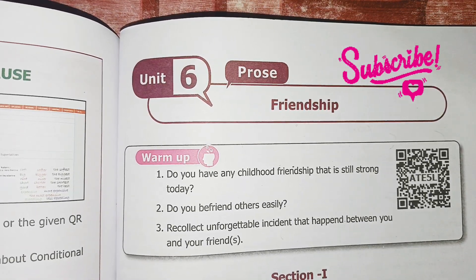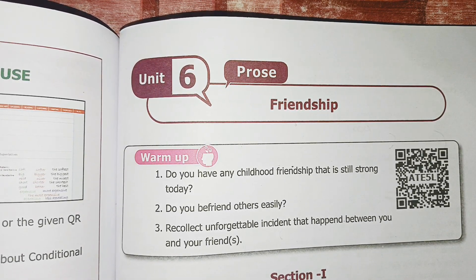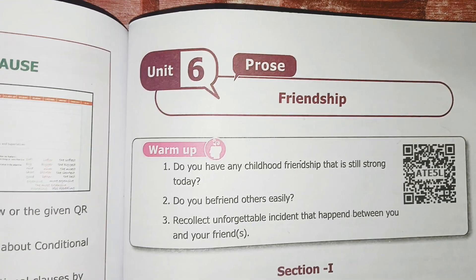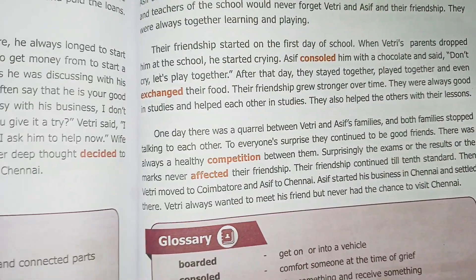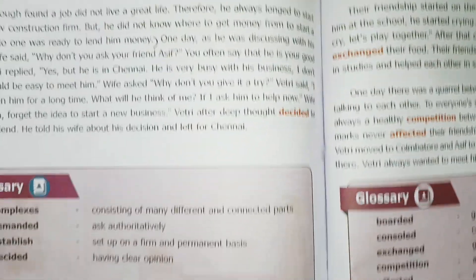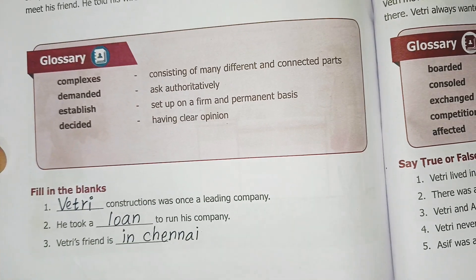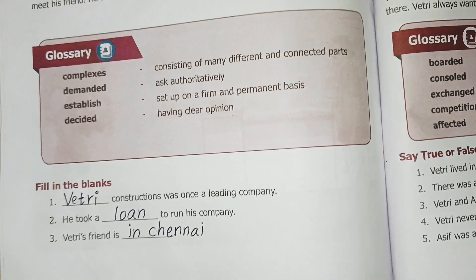Students, today we will look at 8th Standard English Unit 6 Prose - Friendship. In this lesson, we will look at the book back exercises and answer the following questions. We will also look at the balance in this video. Now, fill in the blanks. Page No. 152.